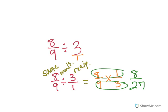Is there anything that can divide into eight and 27 to simplify it? No, so that is in simplest form. So my answer is eight-twenty-sevenths.